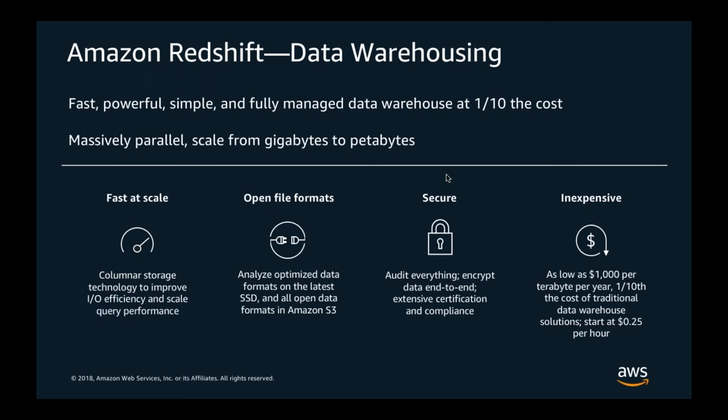Amazon Redshift is a massively parallel processing engine with multiple compute nodes operating in parallel against your data. When you submit queries, it computes the execution plan and sends it to multiple compute nodes that operate across your data in parallel. You can seamlessly scale from a few gigabytes to petabytes. Data stored in Redshift is in a columnar format — more suitable for analytical workloads and reducing IO.